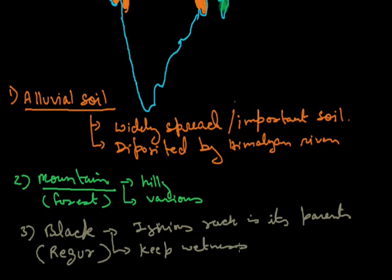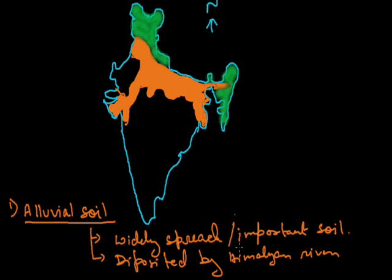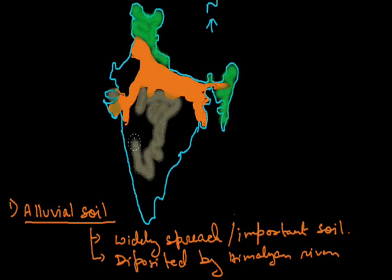Its texture keeps the wetness of water, and that is why this soil is too much suitable for the production of cotton. This type of soil is basically found in the Deccan Trap part of India.